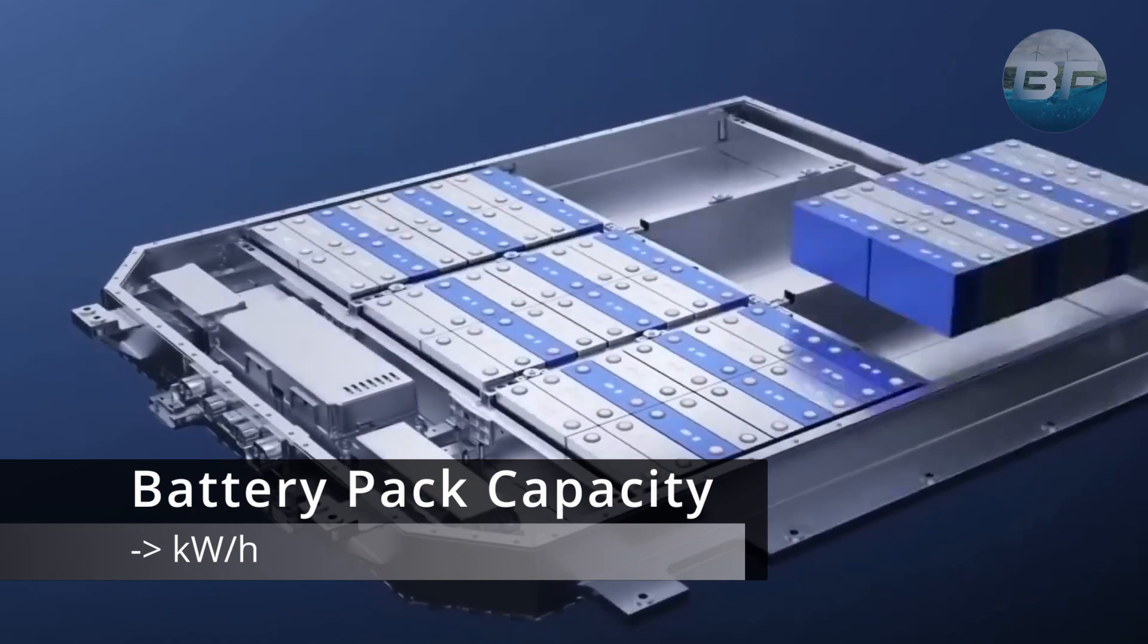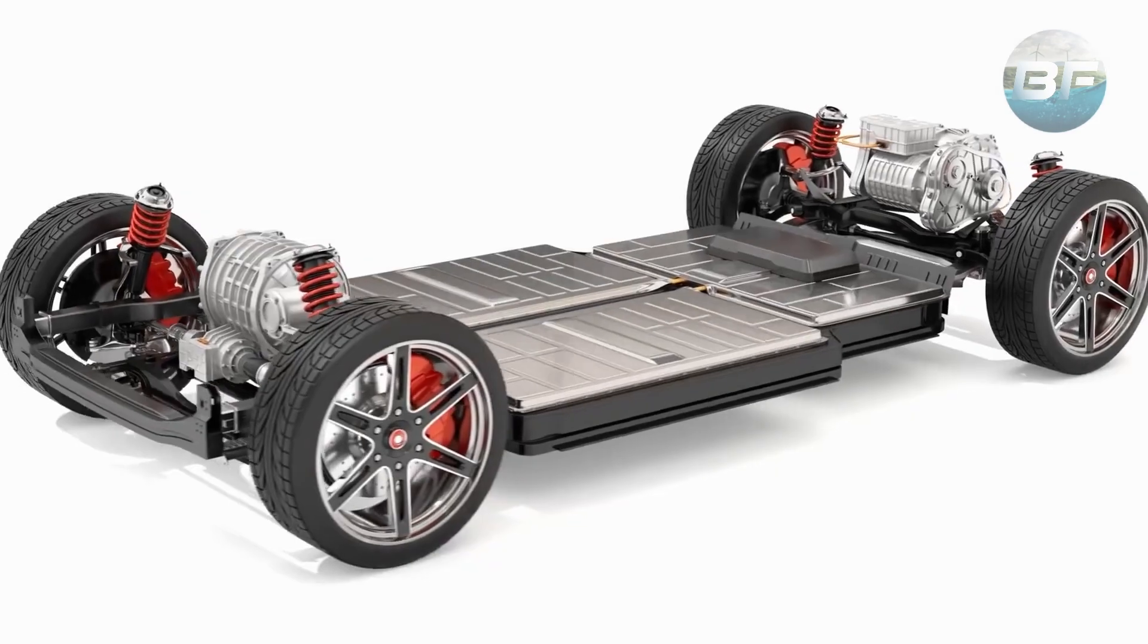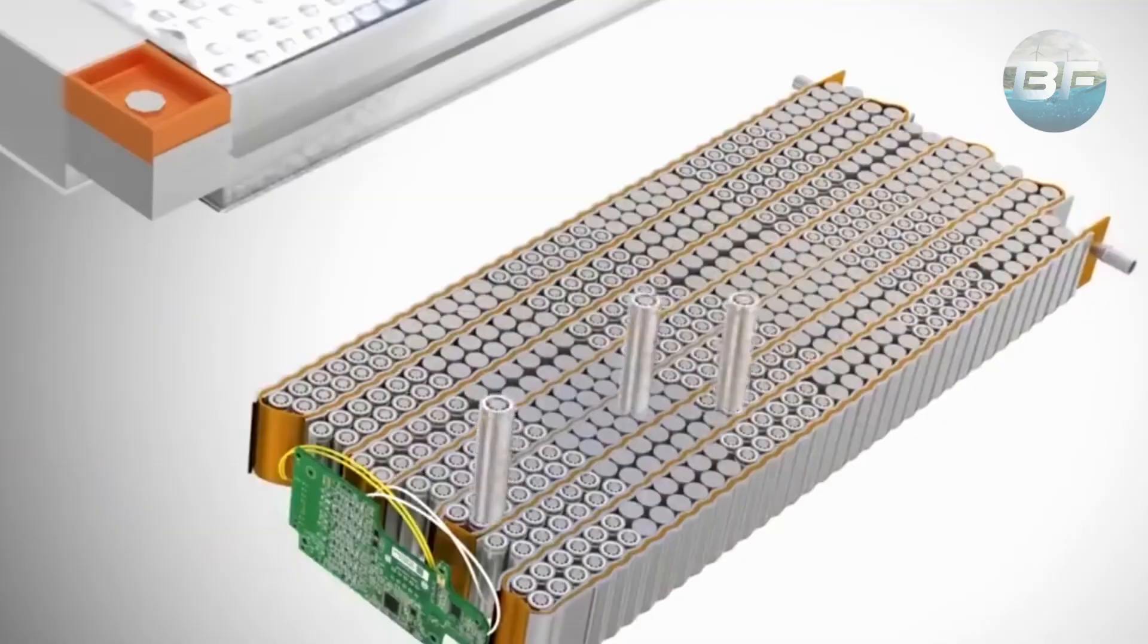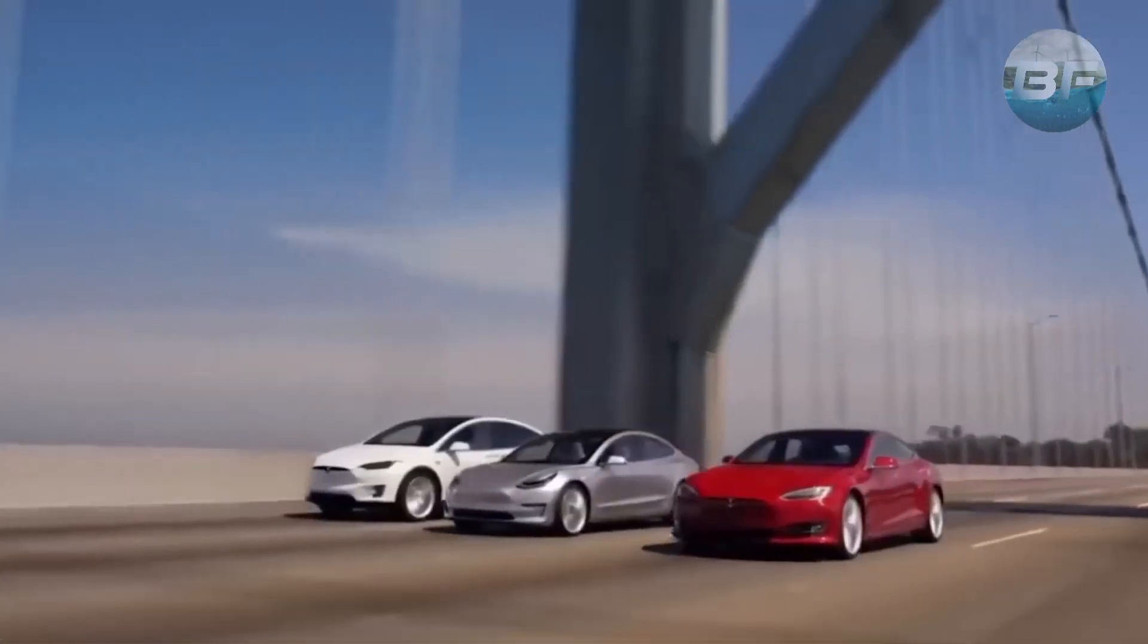The battery pack's capacity, measured in kilowatt hours, determines the range of the vehicle on a single charge. A typical electric vehicle may have a battery pack capacity of anywhere from 30 kilowatt hours to over 100 kilowatt hours, depending on the vehicle's size and intended use.